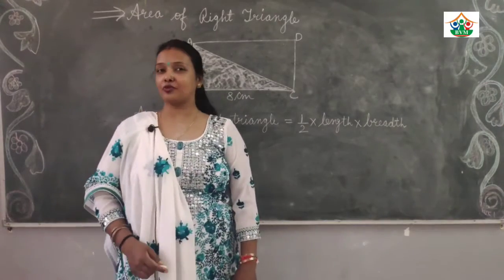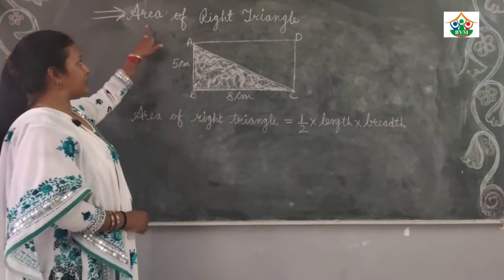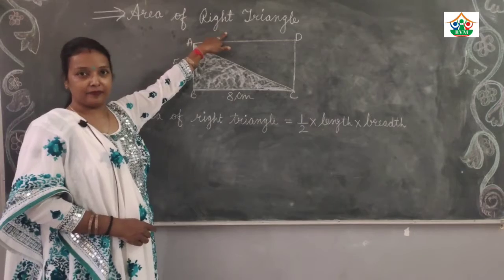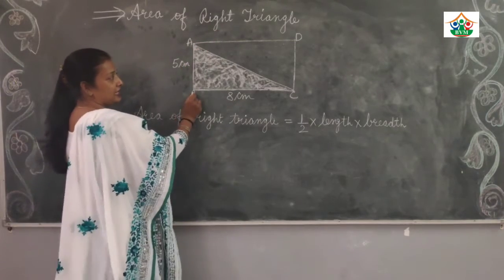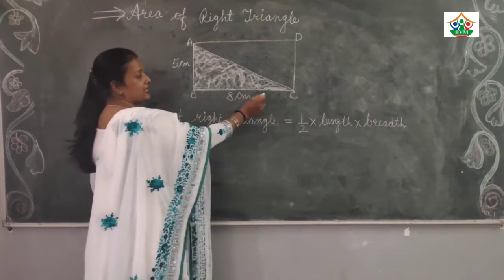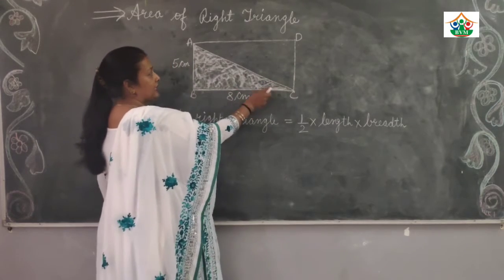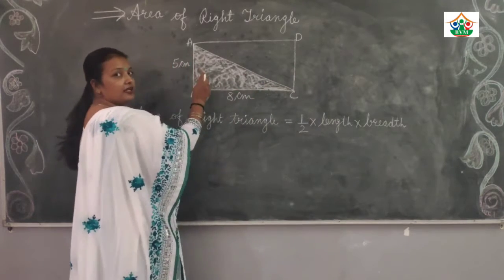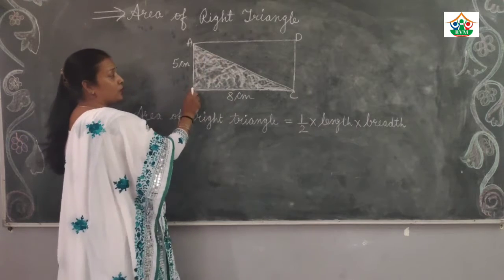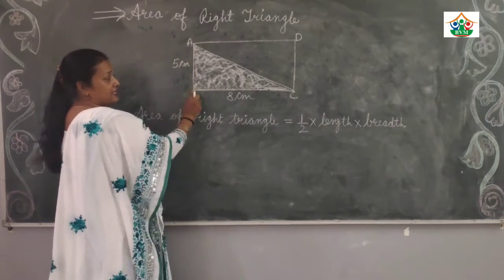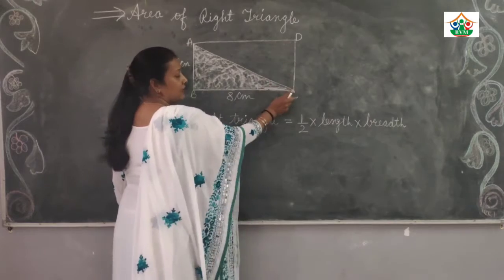Hello everyone, today's topic is area of right triangle. I have a rectangle ABCD. One diagonal AC divides it into two parts: triangle ABC and triangle ADC.